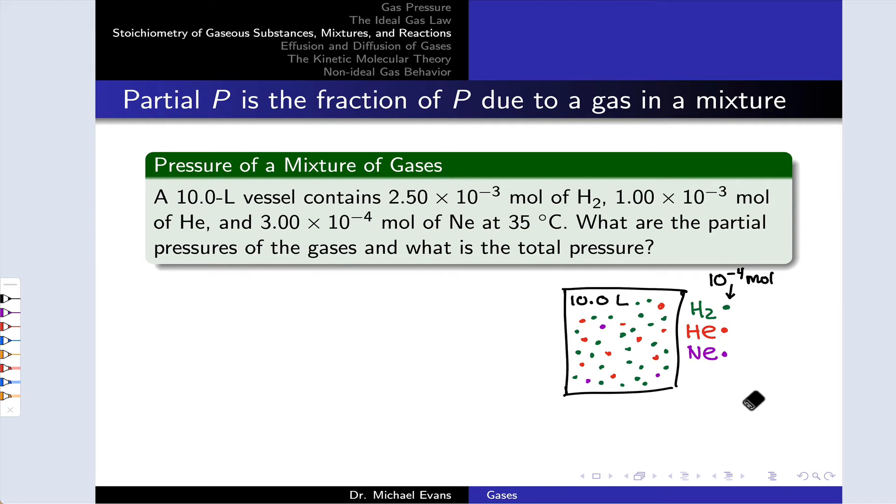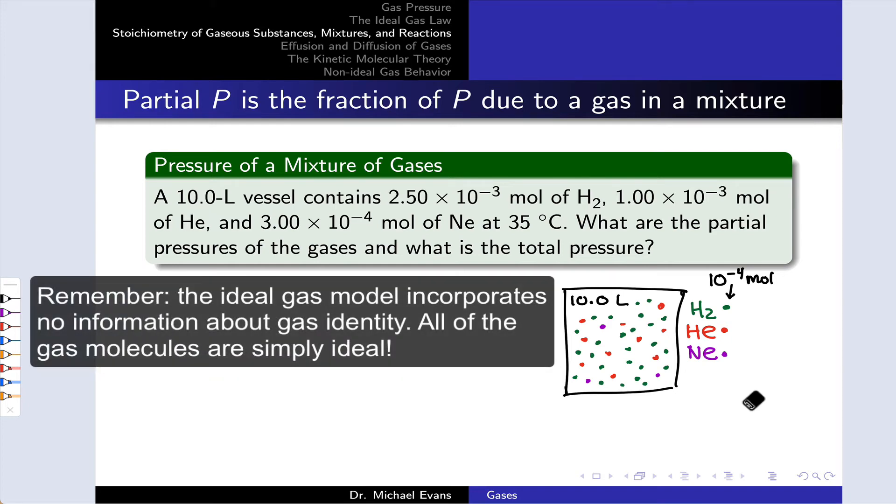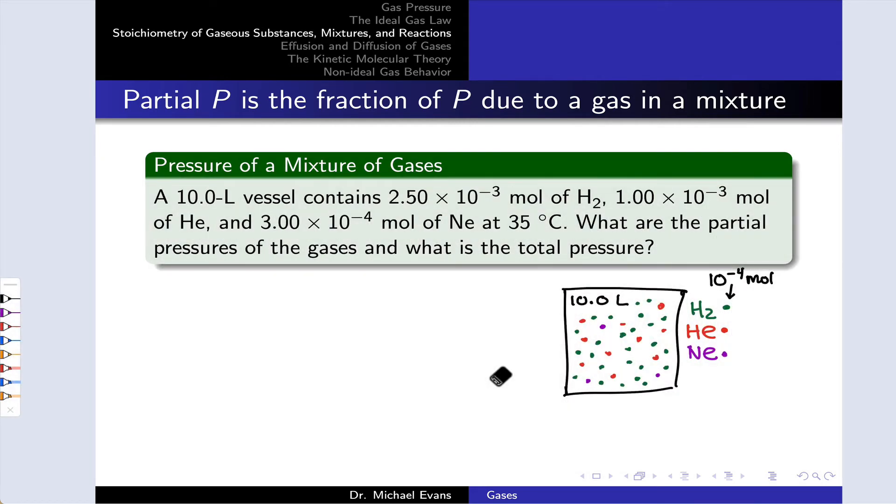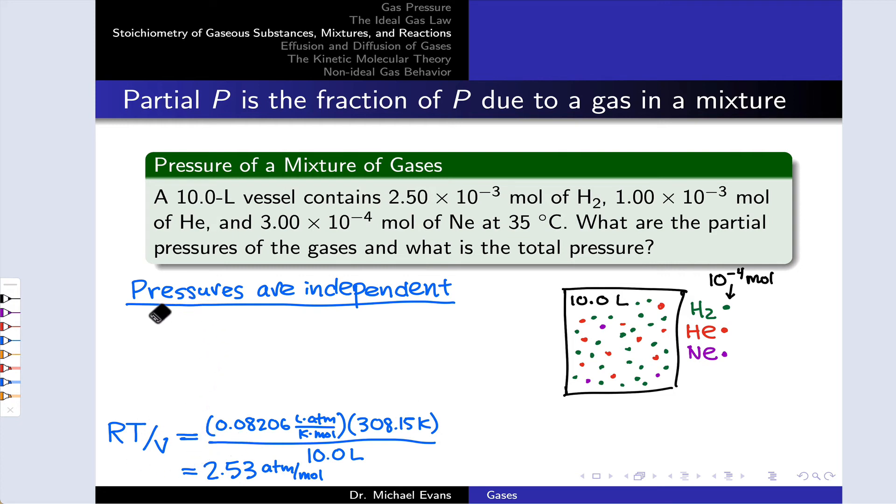Now that we have this picture, we can begin to appreciate that if we just ignore the identity of each gas, we could calculate the total pressure using the total number of moles, the volume, and the temperature. I'm going to take a different approach. I'm going to proceed by noting that the partial pressures are independent of one another. The RT over V factor is going to show up in all of those individual calculations of the partial pressures.